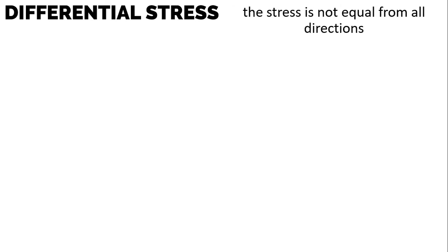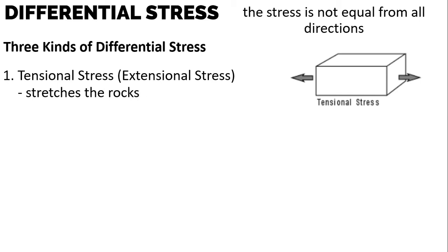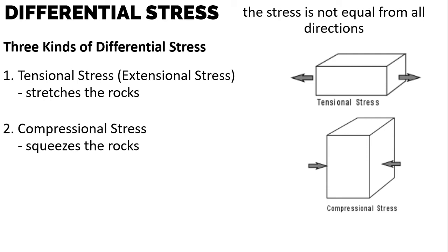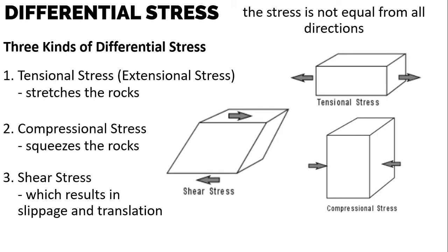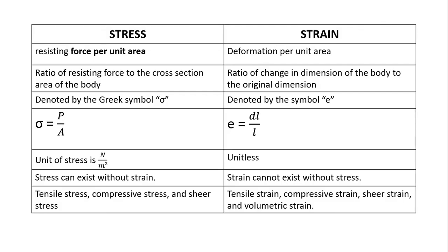Differential stress is when the stress is not equal from all directions. There are three different kinds of differential stress: tensional or extensional stress, which stretches the rocks; compressional stress, which squeezes the rocks; and shear stress, which results in slippage and translation. The most important distinction is that stress is the resisting force per unit area, and strain is deformation per unit area. Also remember: stress can exist without strain, but strain cannot exist without stress — stress is the cause and strain is the effect.